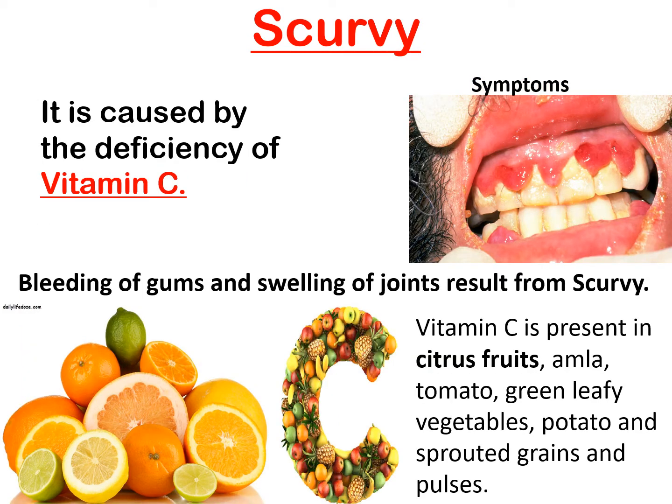Another disease is scurvy, which is caused by the deficiency of vitamin C. Bleeding of gums and swelling of joints result from scurvy. Vitamin C is present in citrus fruits, amla, tomato, green leafy vegetables, potato, and sprouted grains and pulses.